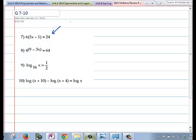This next one, number 7, is actually quite easy. It's a linear equation, and I know it's linear because there are no x's in the exponent spots. And so we have 6(3x - 1) = 24. This is actually a very easy equation to solve.